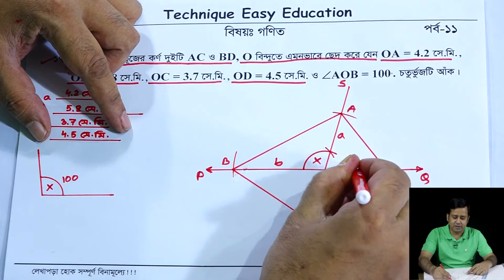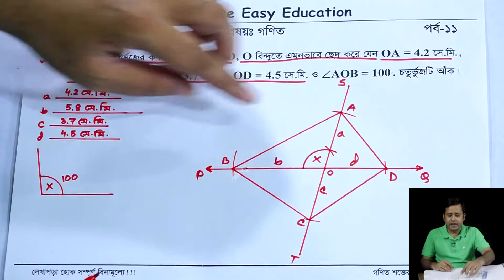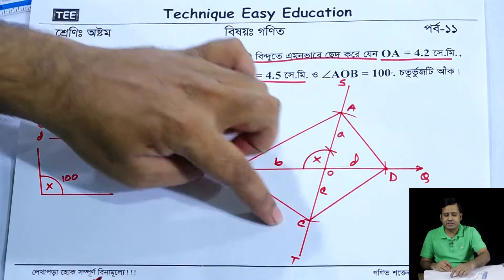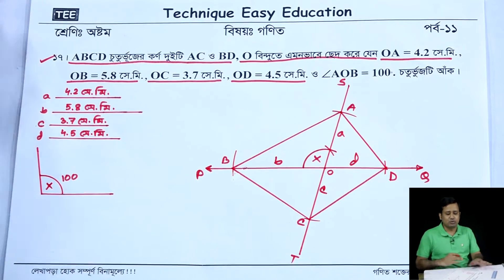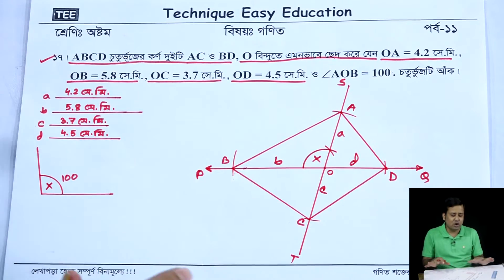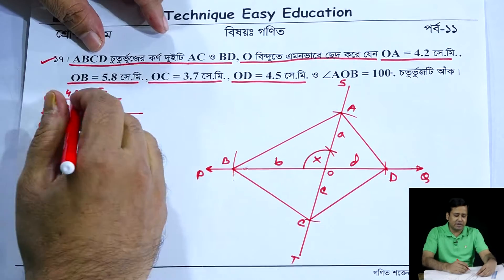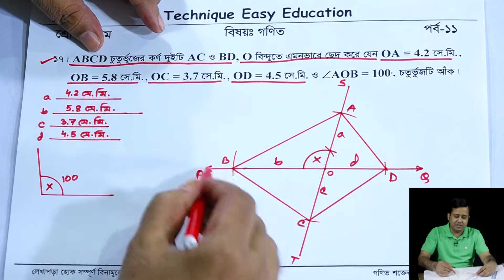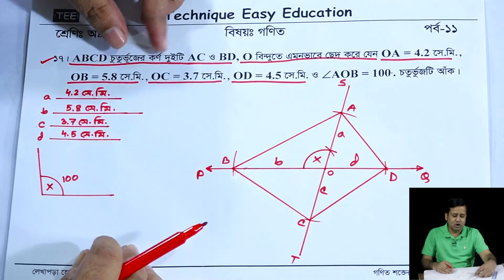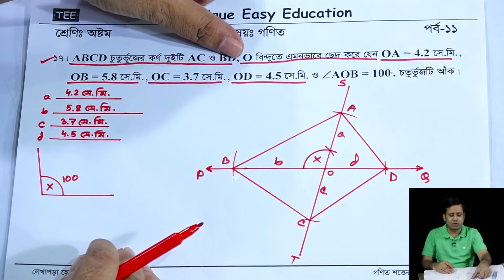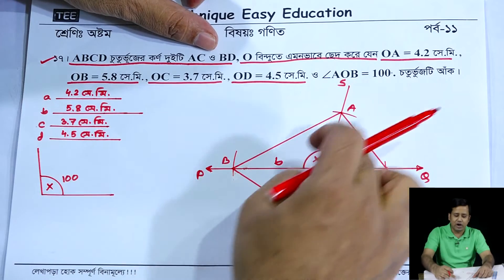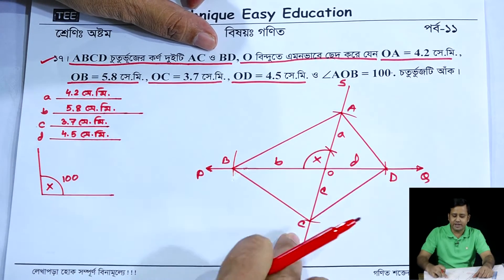So here I'm going to show you the location of the intersection. A, B, C, D, N, O, C, O, B, D. You can see A, B, C, D, N, O, C, O, B, D. If you see A, B, C, D, N, O, B, D.